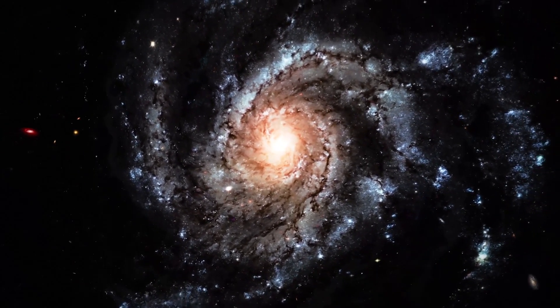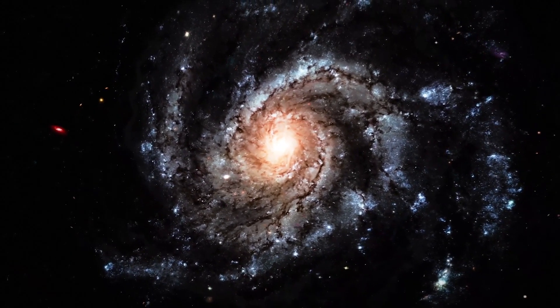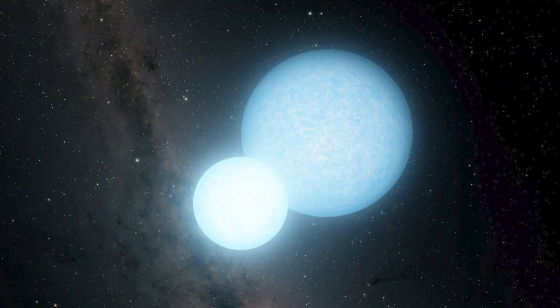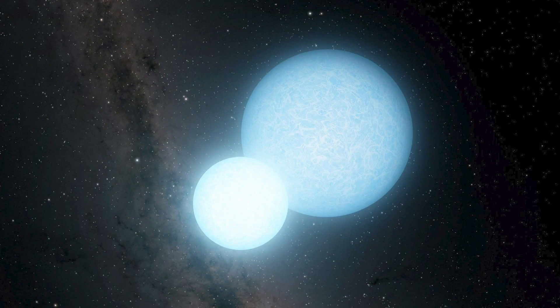Scientists have learned a lot about the universe by studying supernovas. They use the second type of supernova, the kind that involves white dwarfs like a ruler, to measure distances in space.